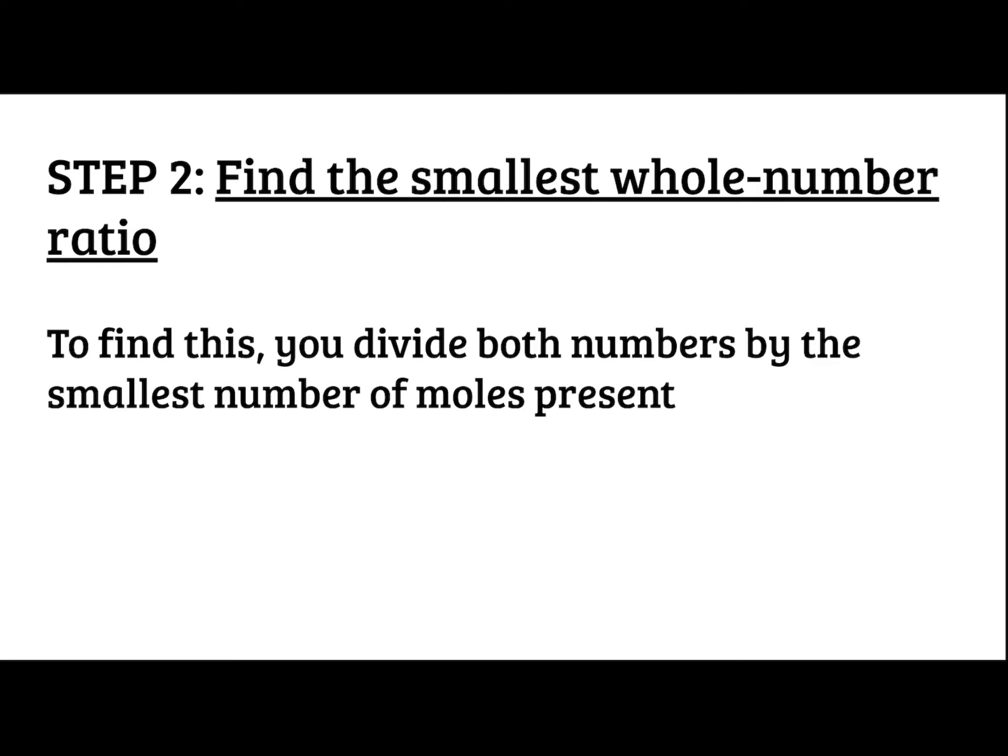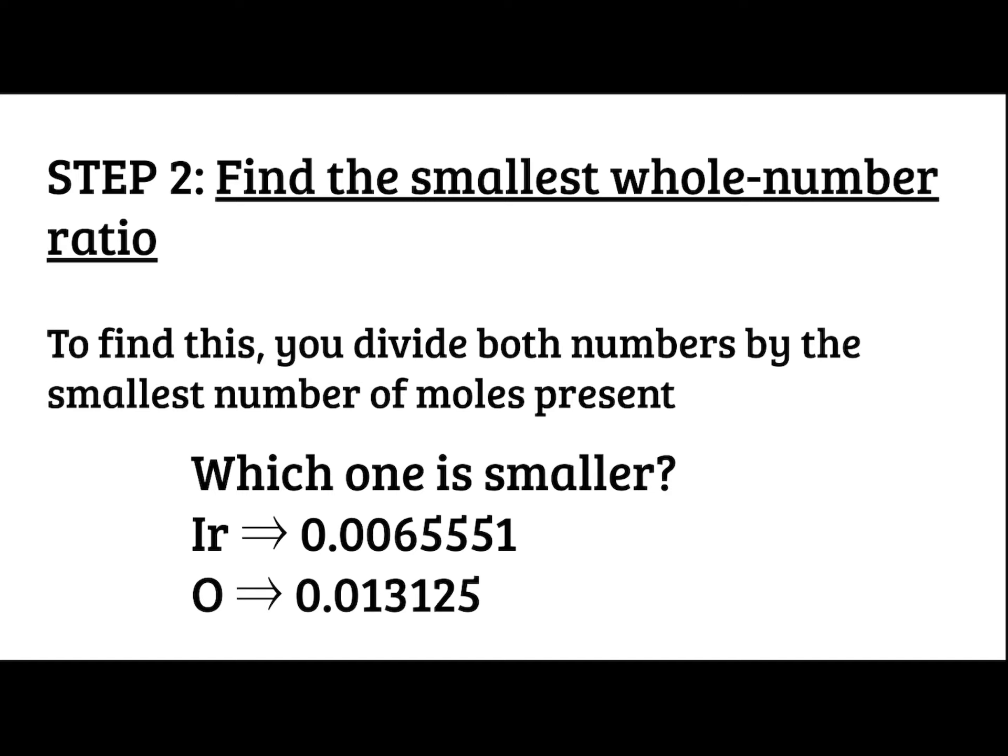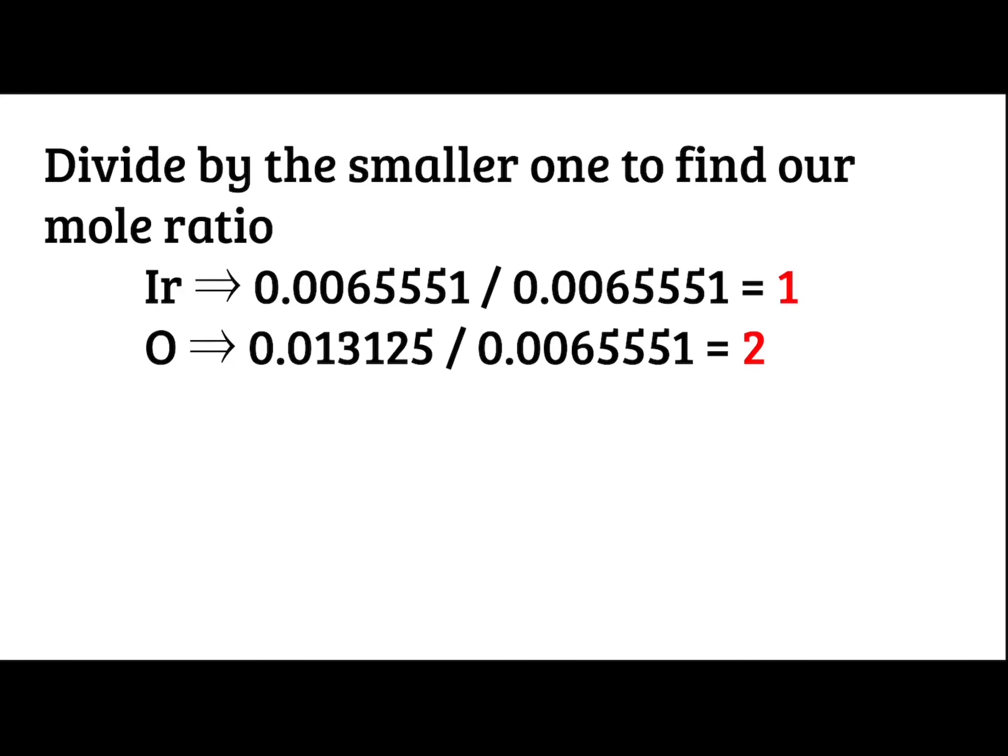Once I have those in moles, I need to find the smallest whole number ratio. So to find that, divide both numbers by the smallest number of moles present. So which one of these is smaller? Well, that's going to be iridium. So I'm going to divide both of these by that specific number. Obviously, if it's divided by itself, it's 1. And then for oxygen, when I divide that, the ratio is 2. So make sure you round up to a whole number. So then I just plug in those numbers in red into my formula. So I have IrO2. That is your empirical formula. That is your smallest whole number ratio.